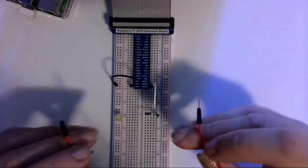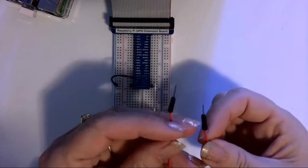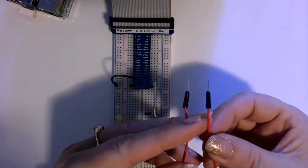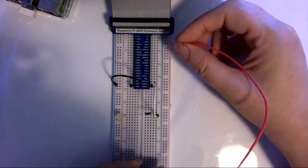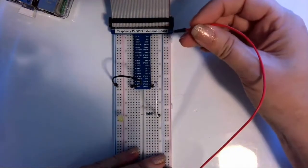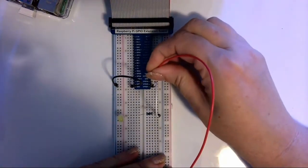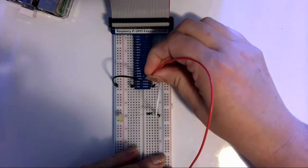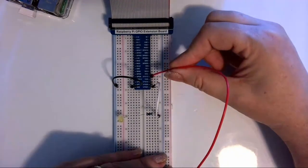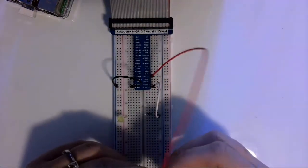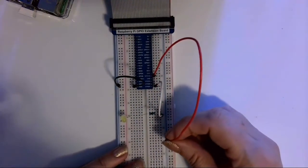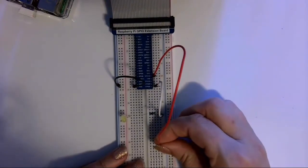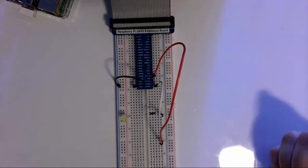We're going to need a male-to-male jumper and we're going to go from one of these GPIO pins. I think I'm going to go from GPIO pin 12, but again it doesn't really matter as long as you know which one you're in. So I'm going to jump from GPIO pin 12 down here to row 45.